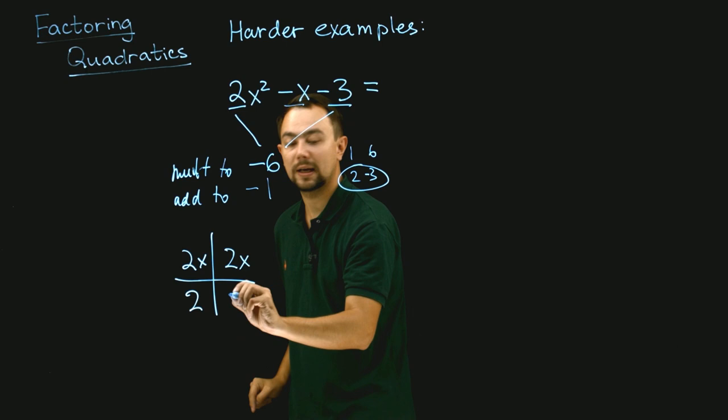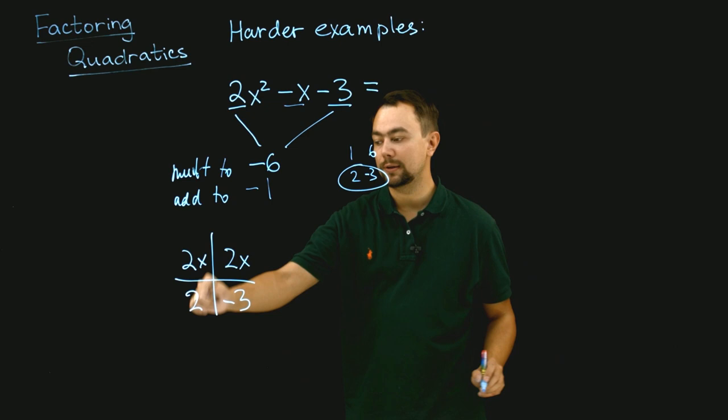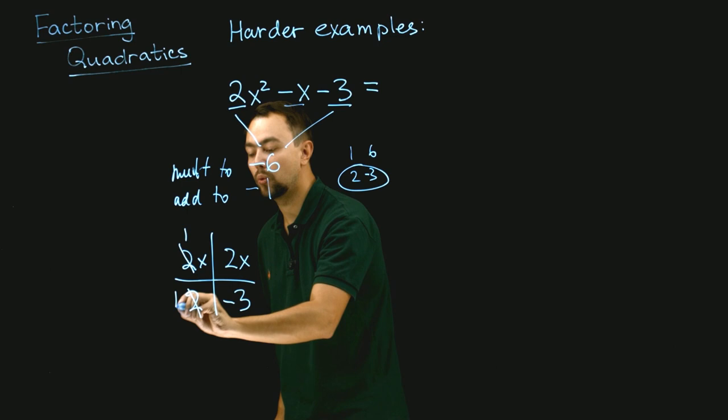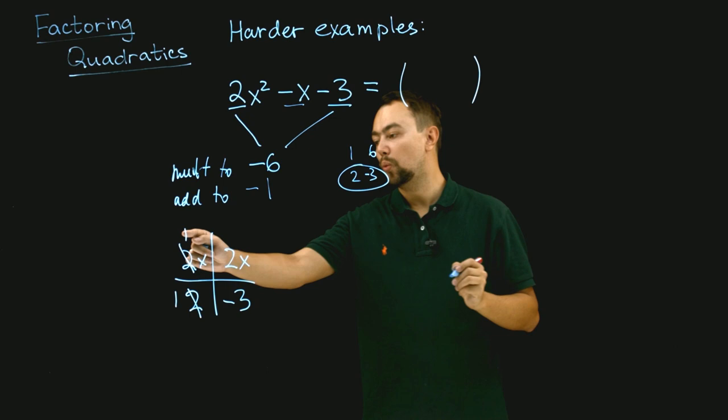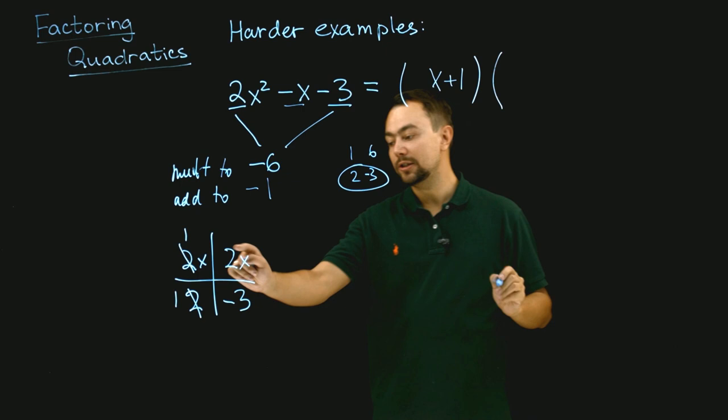Looking at the first column, 2 cancels out, so it becomes 1 and 1. Then we write the answer: x plus 1 and 2x minus 3.